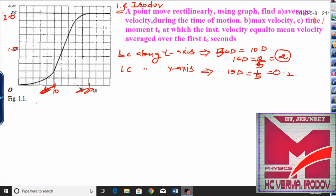First of all you have to calculate the least count along the time axis, that is the x-axis. There are 5 divisions equal to 10, so 1 division equals 10 by 5, that is 2. Along the y-axis 1 small division equals 1 by 5, that is 0.2. Along the y-axis the least count is 0.2.